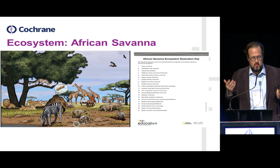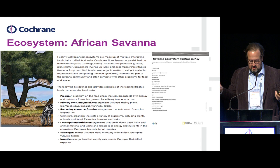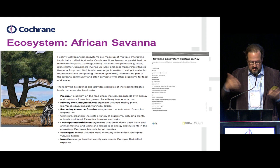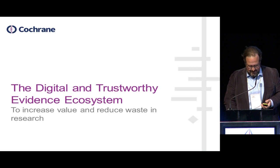I think we all know what we mean when we hear the term ecosystem. Since we're on this magnificent continent, we could refer to the African savannah as an example. A healthy ecosystem is made up of multiple interacting food chains, food webs, creatures, and so on — that's well balanced and interacting. And later over a drink we can debate whether systematic reviewers or guideline developers would be considered scavengers, decomposers, or producers.